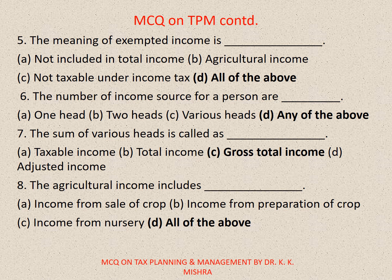Question 5: The meaning of exempted income is — A. Not included in total income, B. Agricultural income, C. Not acceptable under income tax, D. All of the above. The correct option is D. All of the above.